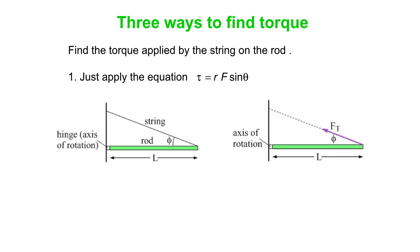Method one: just apply the equation — torque equals R times F times sine theta. In this case, the force we're dealing with is the force of tension. We have an angle phi labeled between the rod and the string itself. R here is the length of the rod, L. The force in question is FT, and the angle is phi, so we get L times FT times sine phi. That's our torque — LFT sine phi — a counterclockwise torque about that axis of rotation.